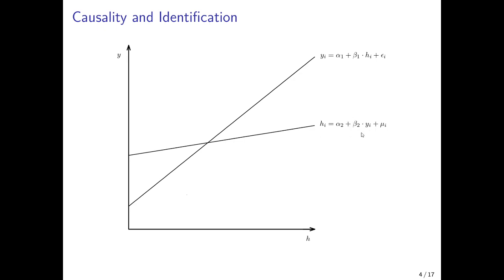According to a coefficient beta 2 of this slope. And we also have measurement error here, mu i.